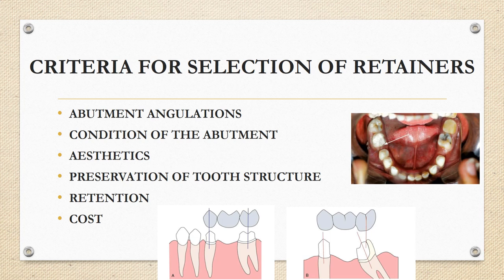The last criterion is cost. Full veneer all ceramic retainers are recommended for anterior tooth replacement, but they are more expensive than metal ceramic and facing retainers. If cost is a factor, metal ceramic restoration can be considered in the anterior region and all metal restoration in the posterior region. For cost-conscious patients, a ceramic facing on the labial and buccal surfaces anteriorly, combined with complete metal retainers posteriorly, is a viable option.